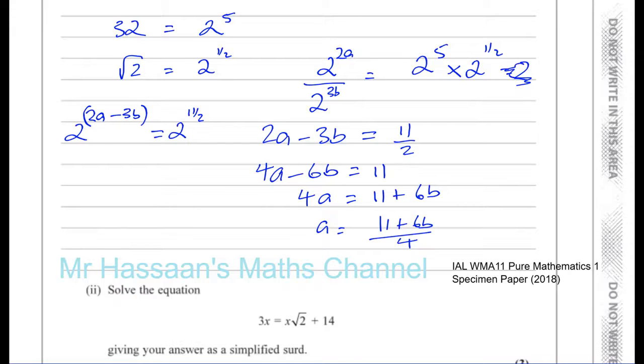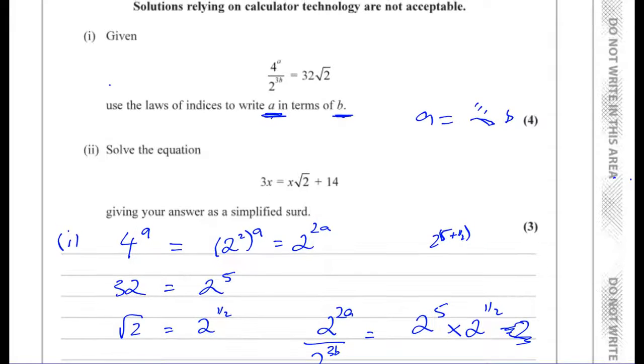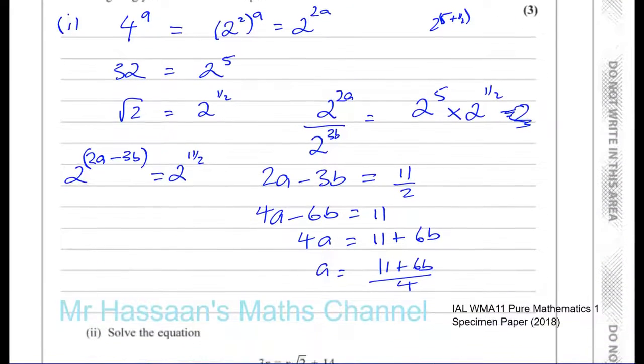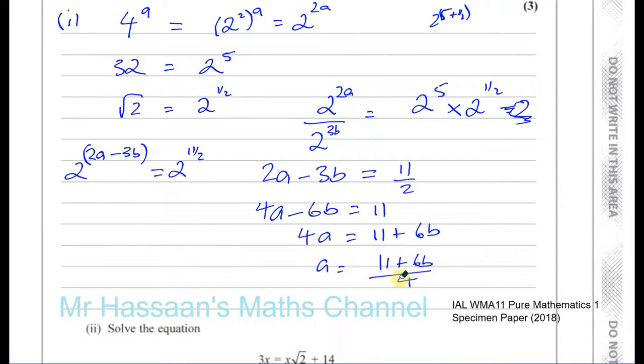Now they didn't specify any particular form. Sometimes they'll say as a number plus something b. It's given it in open-ended. So we can leave it as a in terms of b as one whole fraction as we have, or as two separate fractions. You could write it as 11 over 4 plus 3 over 2b. You could also write them in decimal form. But it doesn't specify, so it's fine to leave it in any of these ways. I prefer this way. I'll leave it as one fraction. So that's part 1 done.